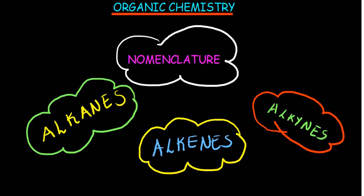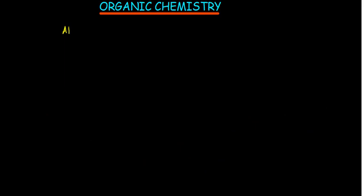In this video I'm going to go over alkanes, alkenes, and also alkynes — understanding them and their nomenclature, how to name them. We are going to start with alkanes, alkenes, and alkynes. All these are hydrocarbons, meaning they only contain carbon and hydrogen.